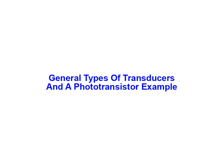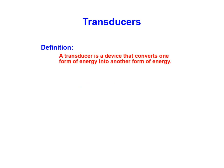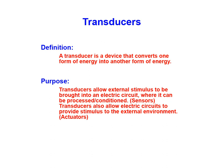In this animation we're going to examine the general types of transducers, as well as look at a practical example that uses a phototransistor. We'll begin by defining the term transducer. A transducer is a device that converts one form of energy into another form of energy. Transducers allow external stimulus to be brought into an electric circuit, where it can be processed or conditioned. Transducers also allow electric circuits to provide stimulus to the external environment.